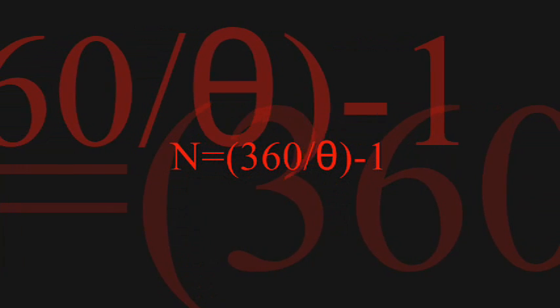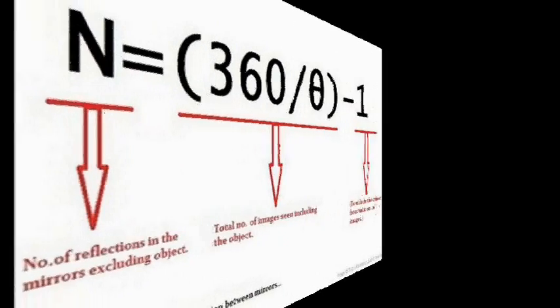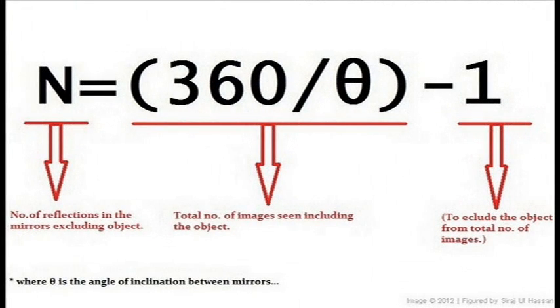The formula is n = 360/θ − 1, where 360/θ gives the total number of images including the object, and minus 1 excludes the object. So n gives you the number of reflections seen in the mirror, and the object itself is not included.